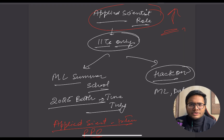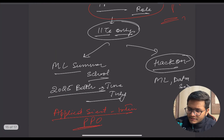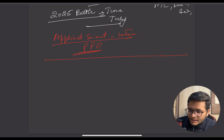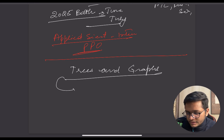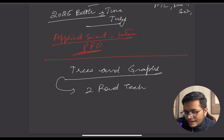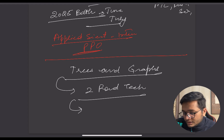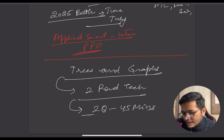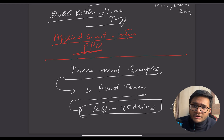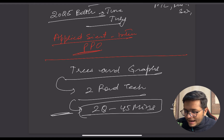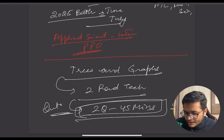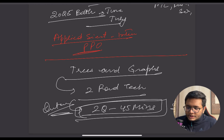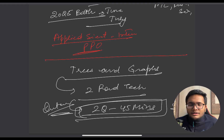For Amazon interviews, topics are not strictly specified, but make sure you prepare trees and graphs well. Generally there are two technical rounds, each with two questions in 45 minutes. You'll mostly see standard problems — they won't heavily modify or create very tricky questions. The crux is that you need to solve them within 45 minutes. If you get selected from the online test, focus majorly on this. I'll make a complete guide on interview preparation in a separate video.